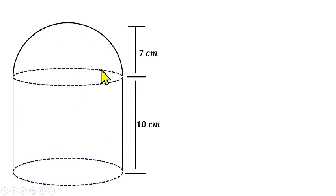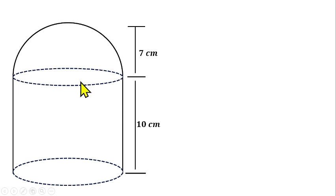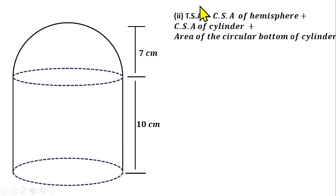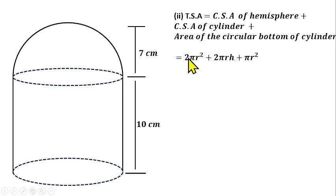So the total surface area equals: curved surface area of hemisphere + curved surface area of cylinder + area of circular base of cylinder. The curved surface area of a hemisphere is 2πr² — this is because the curved surface area of a full sphere is 4πr², divided by 2 gives 2πr². The curved surface area of a cylinder is 2πrh, and the area of the circular base is πr².